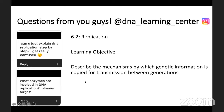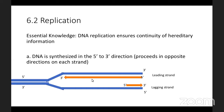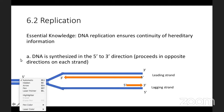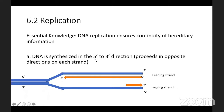I've pulled this directly from the manual I mentioned earlier. Replication is in unit six, section 6.2. The learning objective is to describe the mechanisms by which genetic information is copied for transmission between generations — which is a fancy way of saying we make copies of DNA. The first essential thing you need to know — and this is really important, I would write this down — is that DNA is synthesized in the five prime to three prime direction.